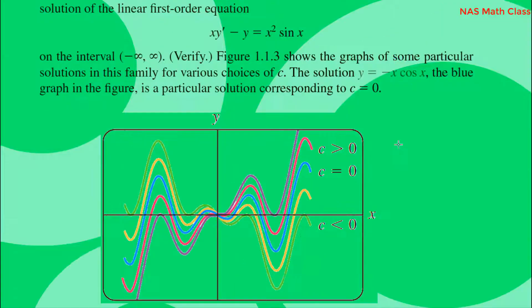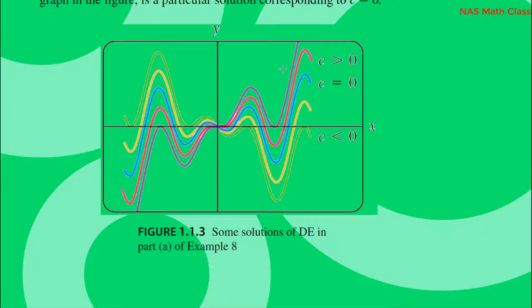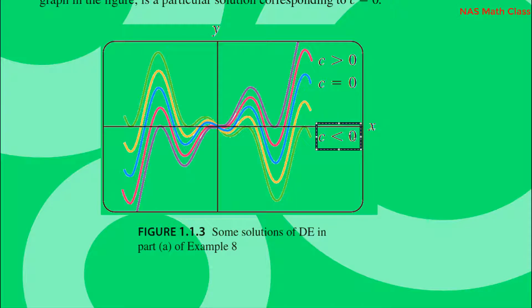When c = 0, the graph of y = -x·cos(x) is obtained, representing a particular solution of the family.